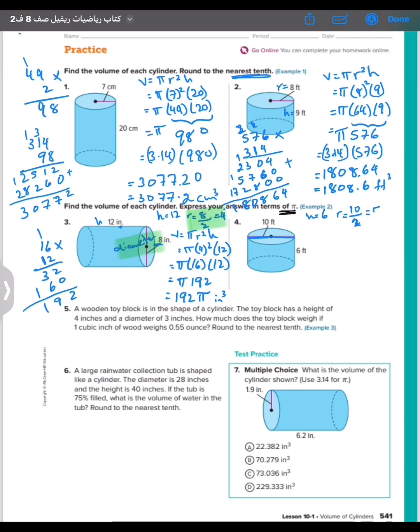Volume equals pi r squared h: pi times 5 squared times 6. Pi times 25 times 6, 25 times 6 equals pi times 150. That means 150 pi feet cube.